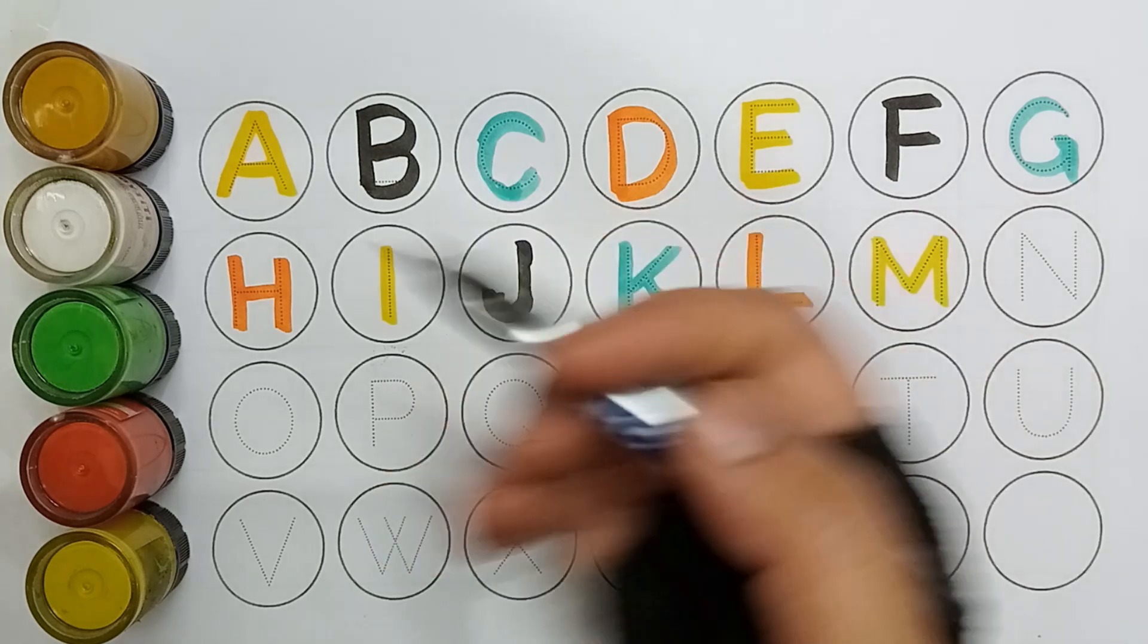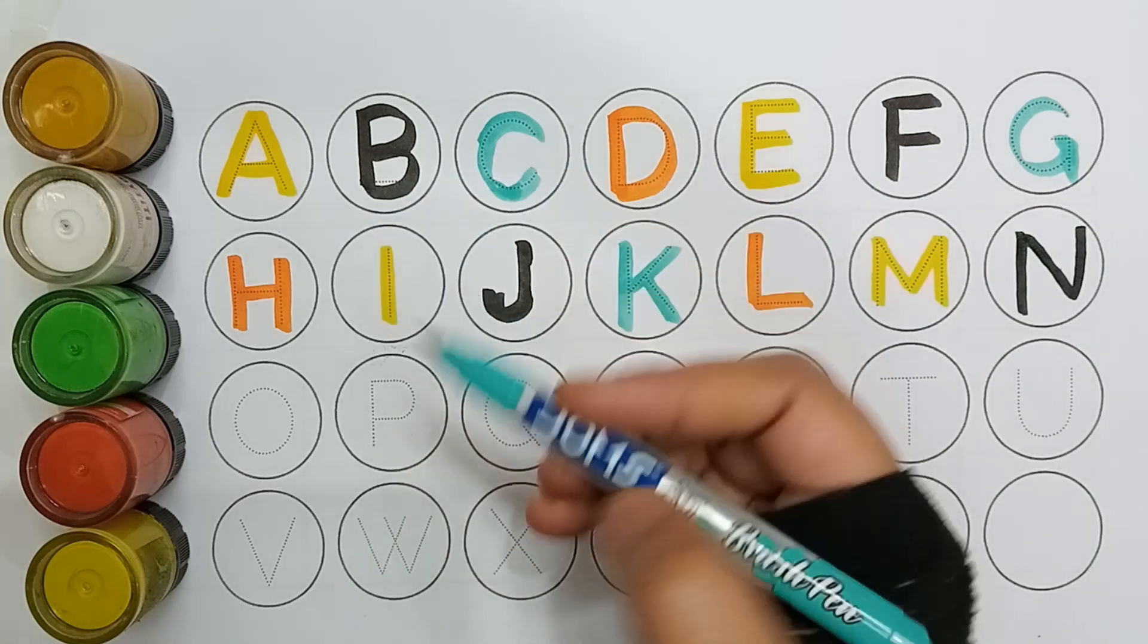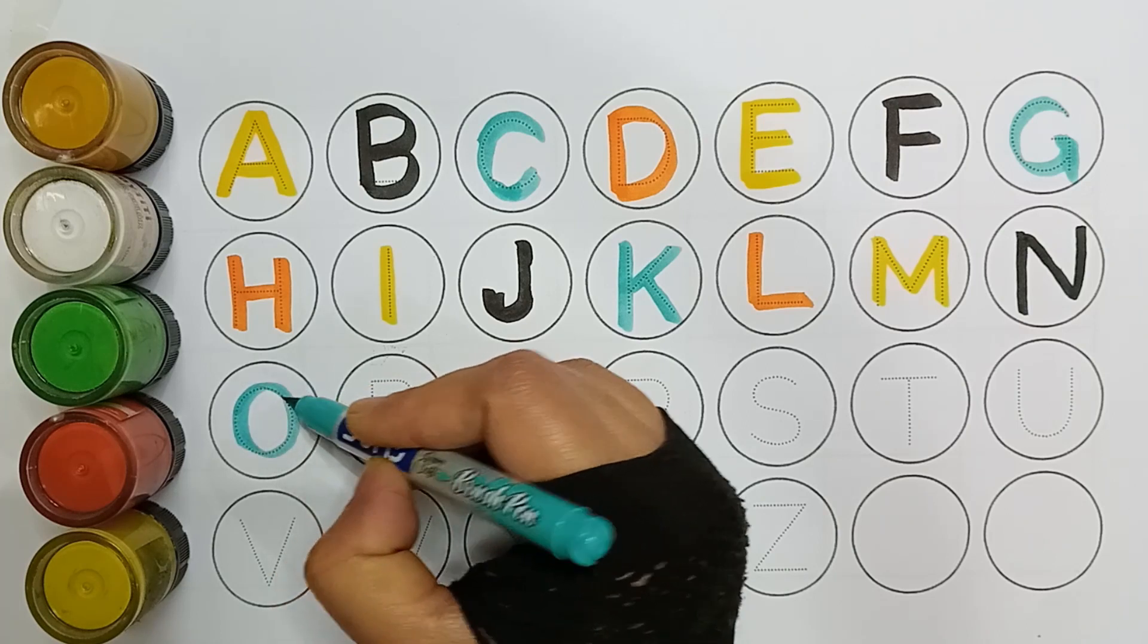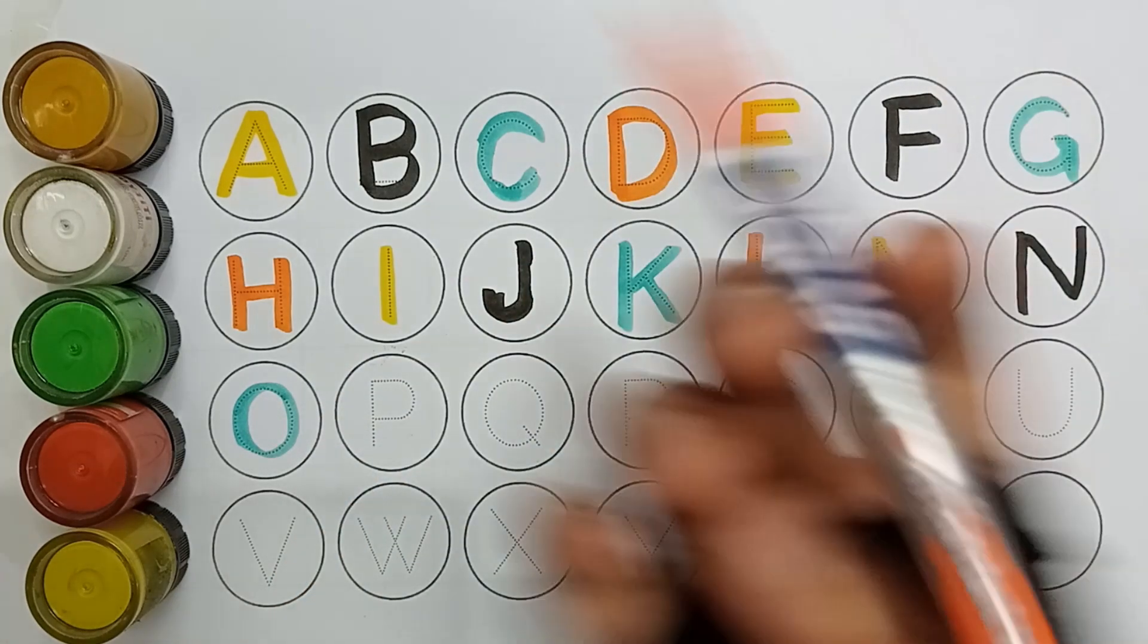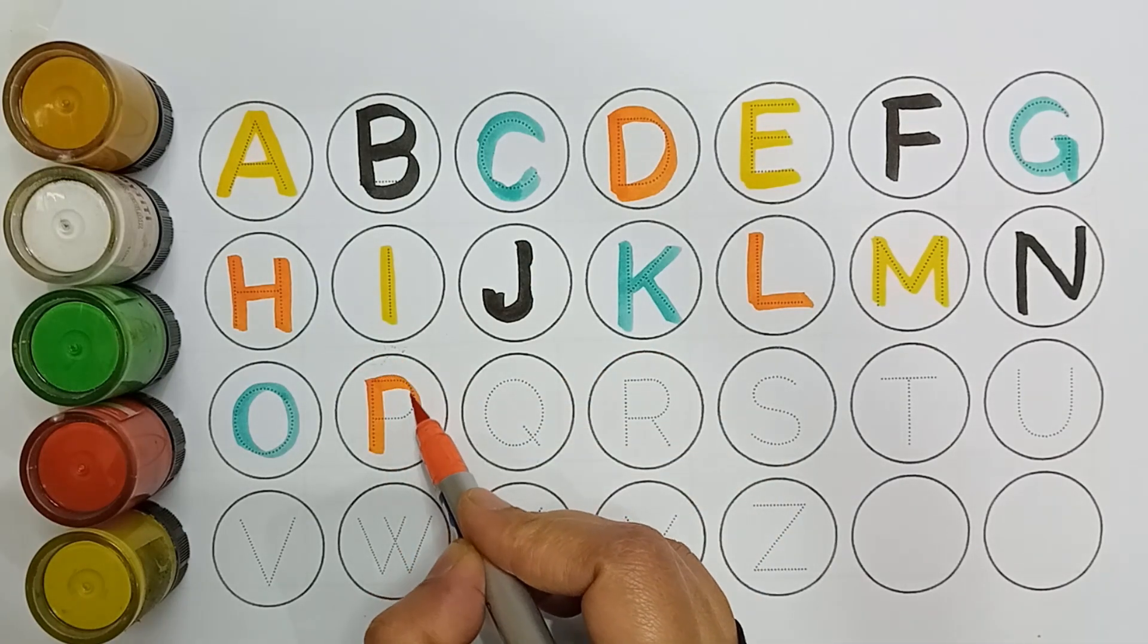Black color, N, N for nose. Green color, O, O for owl. Orange color, P, P for pan.